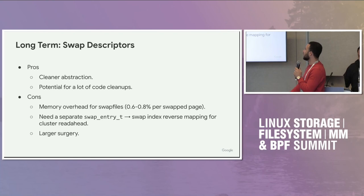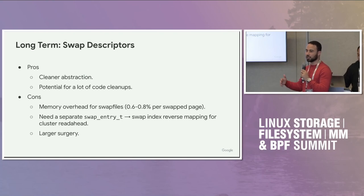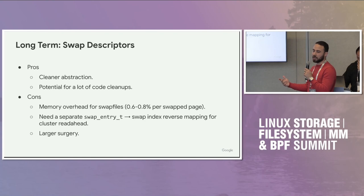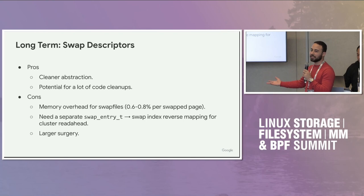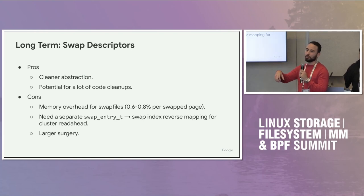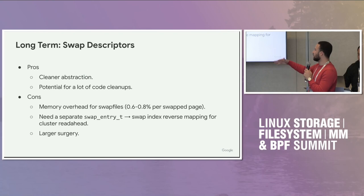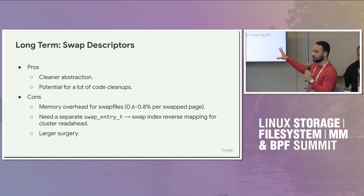This buys us a cleaner abstraction and potential for a lot of code cleanups — we can get rid of things like swap address spaces for swap caches and the current swap counting code, which is fairly complex. But there are problems: in terms of memory overhead, we have to pay the price of a swap descriptor for every swapped page, which is about 0.6% to 0.8% of the size of memory that's actually in swap. For cluster read-ahead for rotating disks, we would need a reverse mapping, which is even worse. And generally, this would be a larger surgery in the code — changing the swap counting and swap cache implementations. So this is something to keep in the back of our minds for the long term.